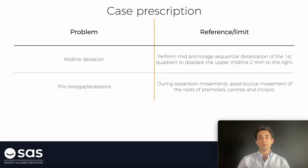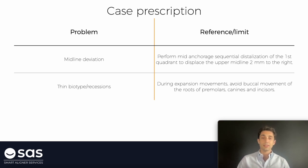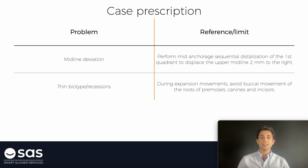Going again with some examples of how to write or how to transmit those references or limits to the technician, we can face different problems. For example, when we face midline deviation problems, we can write it in this way: we can ask the technician to perform mid-anchorage sequential distalization of the upper arch of one quadrant to move the upper midline 2 millimeters to the right. I am writing to the technician the final position of the upper arch and how to create enough space to achieve this anterior movement.